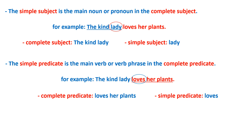Now, let's learn what is a simple and complete subject. Let's check this example here: "The kind lady loves her plants." The complete subject is "the kind lady." And the simple subject is the main noun in the complete subject, which in this example is "lady" only. The same thing goes for simple and complete predicates.